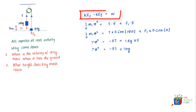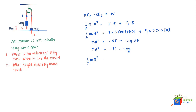Now we apply the same work-kinetic energy theorem to mass m2, the 8 kilogram mass. The final kinetic energy is one-half mv-squared. It's important to remember that the velocity of the 8 kilogram mass at any time is the same as the velocity of the 14 kilogram mass, because if the velocities differed, the string connecting them would slacken. The initial kinetic energy is zero because it starts from rest.